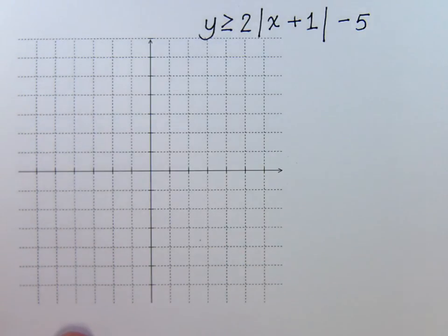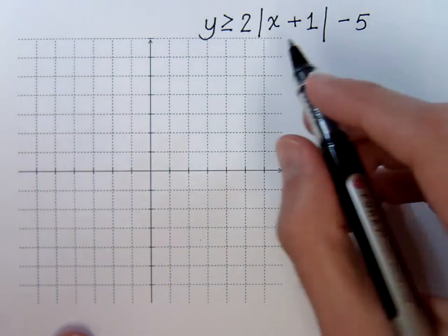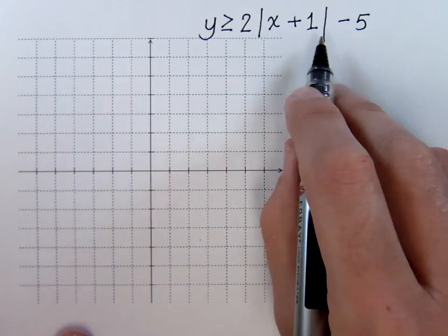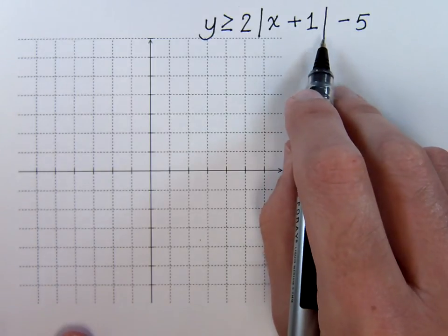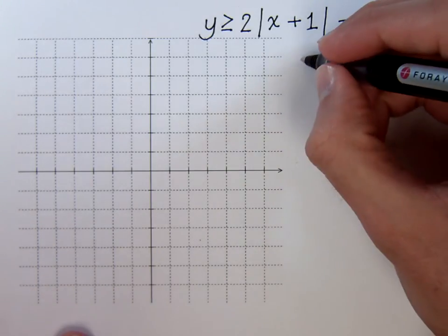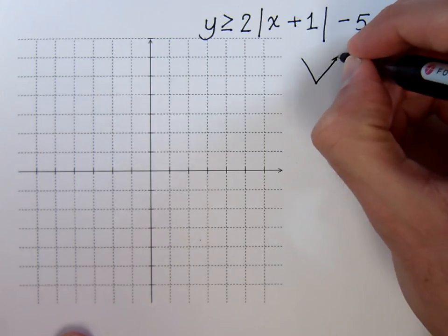Here's another non-linear inequality for us to graph. What's the first thing that jumps out at you in terms of what the shape is going to be? It should be the absolute value symbols here. The absolute value symbols tell you that you're going to have some kind of V-shape.